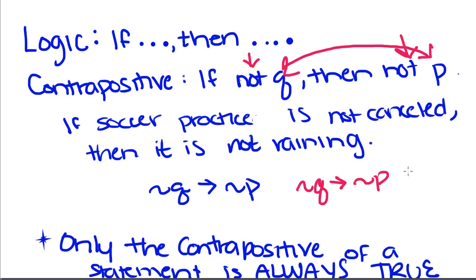Think about it: if we were going to state this a different way, it would just say that if they are having soccer practice, then it's not raining, which makes sense because our original conditional said that if it rains, they will not have soccer practice.